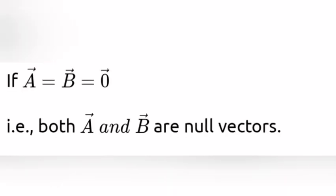3. If n₁a⃗ = n₂b⃗, where n₁ and n₂ are non-zero real numbers, then the relation will hold good if a⃗ = b⃗ = 0⃗. That is, both a⃗ and b⃗ are null vectors. Write any two.